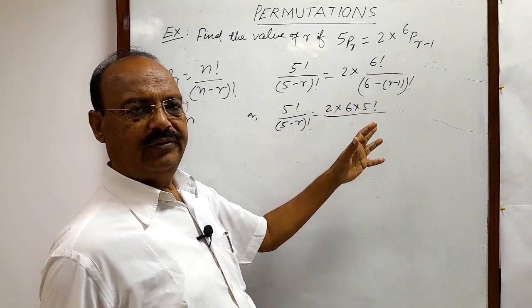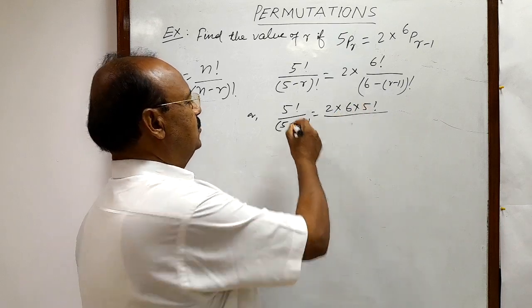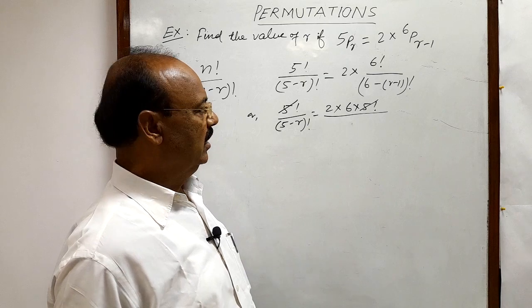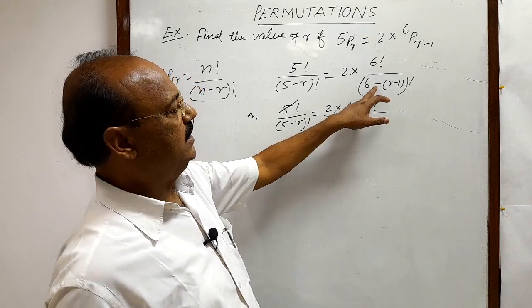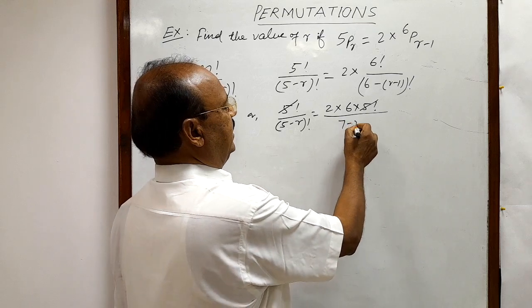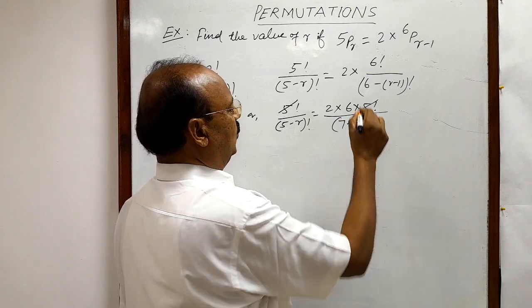So what is the benefit of writing like this? Because 5 factorial from both the numerators, from both the sides, will be cancelled out. And here 6 minus r plus 1 means 7 minus r whole factorial.